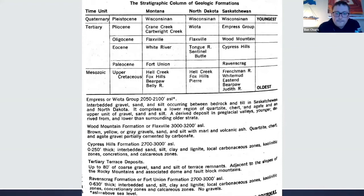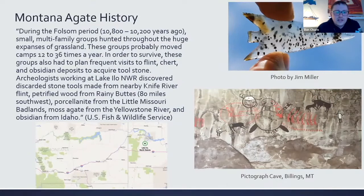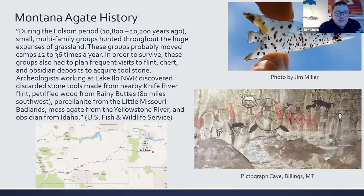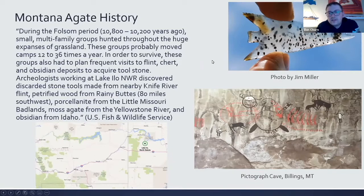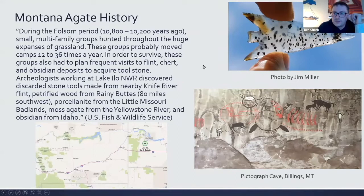Evidence of agate use was found at Lake Ilo in North Dakota. During the Folsom period, small multi-family groups hunted across vast grasslands, moving camp 12 to 36 times a year, and planned frequent visits to acquire stone tools from flint, chert, and obsidian deposits. Archaeologists at Lake Ilo National Wildlife Refuge discovered discarded tools made from Knife River Flint, petrified wood from Rainy Buttes, porcelainite from the Little Missouri Badlands, moss agates from the Yellowstone River, and obsidian from Idaho. You can also find cave drawings at Pictograph Caves State Park in Billings along the Yellowstone River.